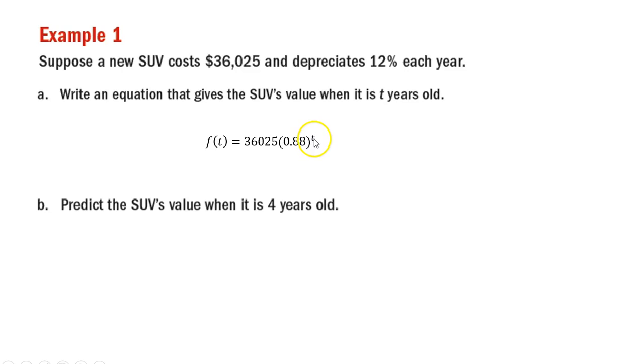You want to find out how much it costs after one year, it's going to be 0.88 to the first power multiplied by 36,025. We can plug in any value for t we want based on years to find out the value of the car after those t years. And we'll do that with four years.